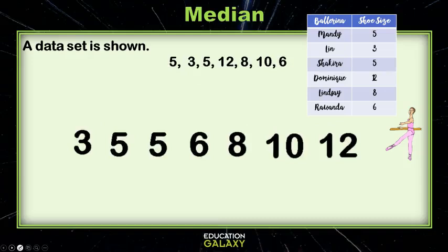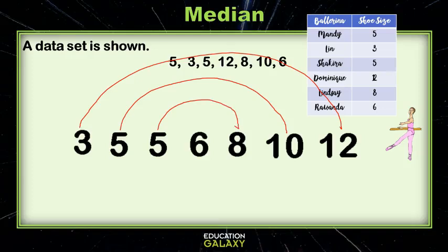So first, as you see, we've arranged them in order from least to greatest. Next, we want to figure out what the middle number is. So we know these two numbers are at the end, and next come these two numbers. Next is the five and the eight. So that means six is in the middle. So the median must be six.